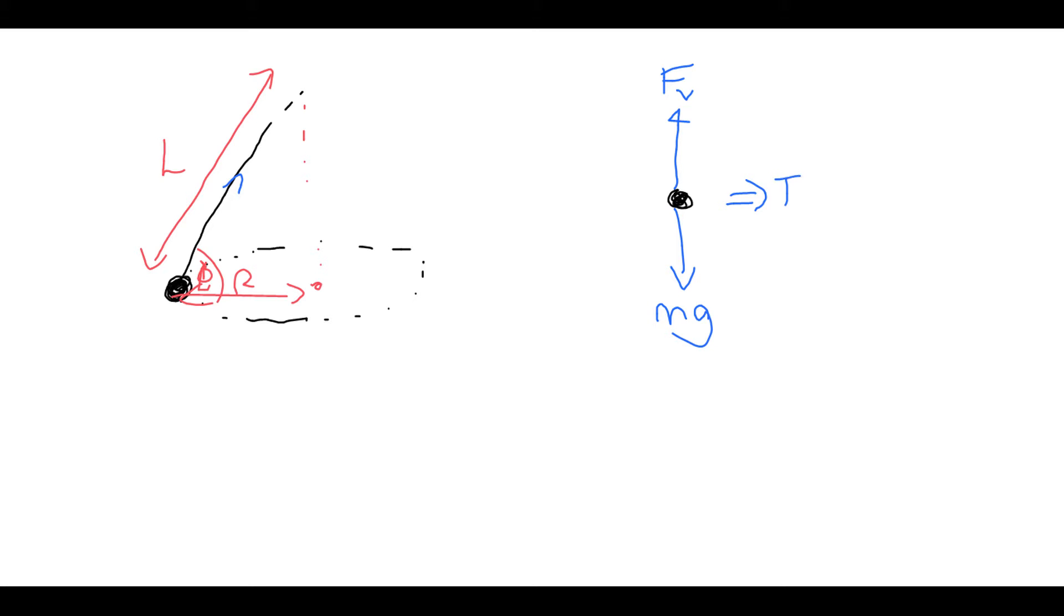The vertical component of the force acting from the string must be equal to that. So what we know is that F sin theta is equal to mg, like this. So we know that the force acting on the string is going to be mg over sin theta, like this. So we've got an equation acting on this system.